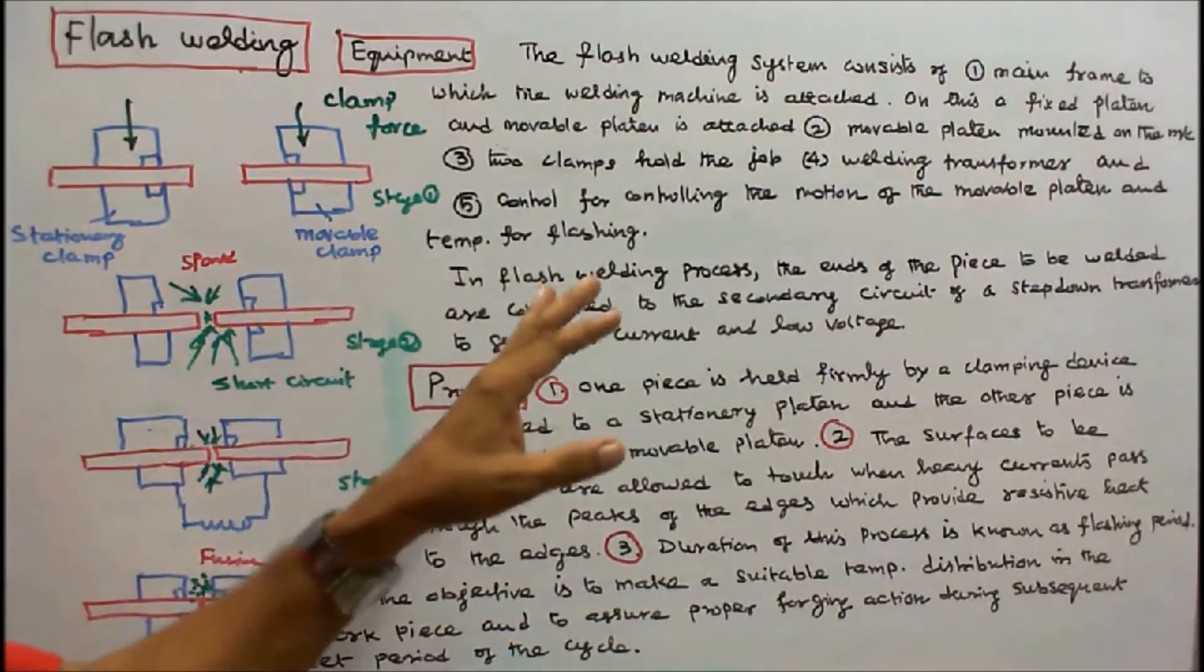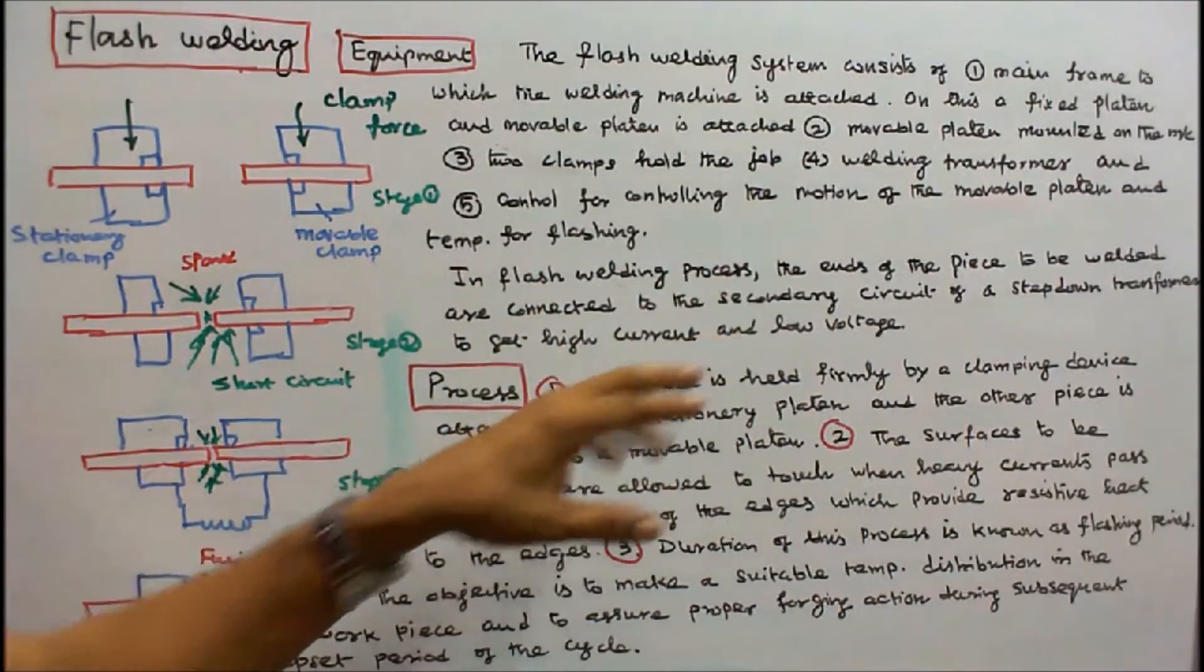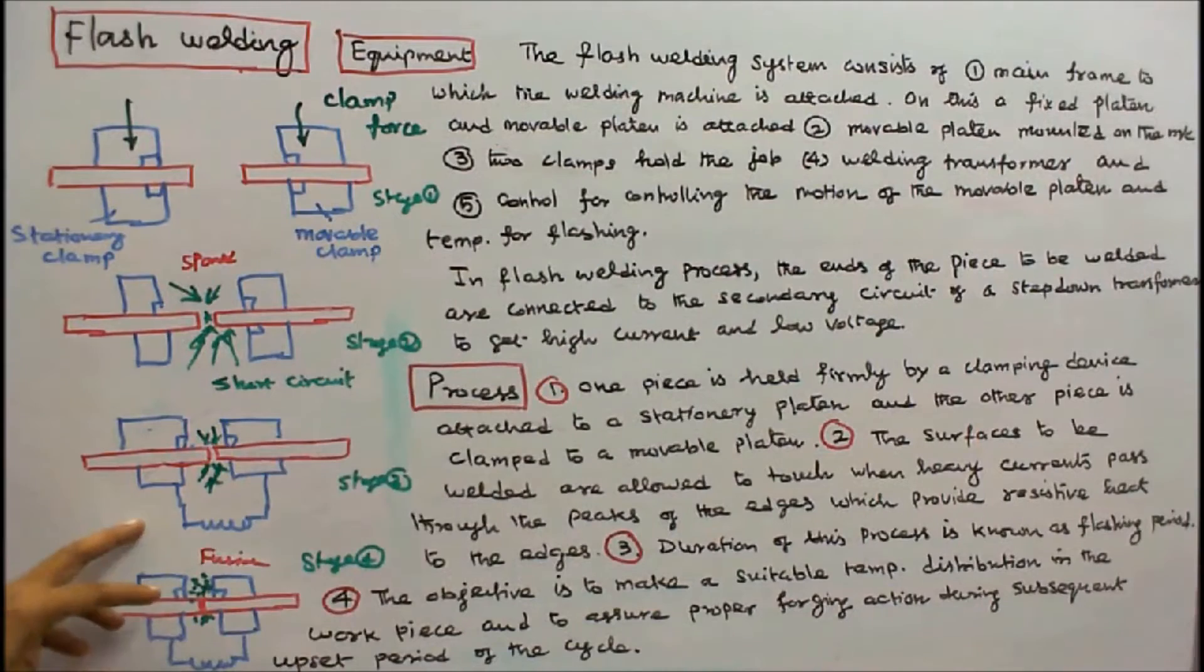In flash welding process, the ends of the piece to be welded are connected to the secondary circuit of a step down transformer to get high current and low voltage. Now we will see the process.